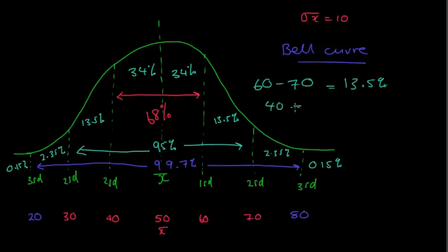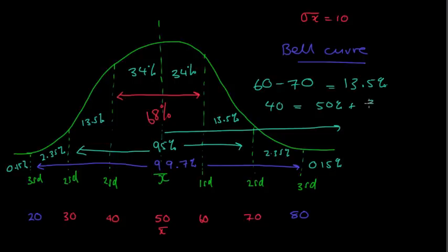We might also ask: what percentage of people scored above 40? Well, above 40 — we have a full half of it which would be 50%, plus that extra 34%, which would give a total of 84%. So you can see what we're doing with our percentages. This is why it's really important that you learn this particular bell curve — go have a look in your textbook and start practising drawing these out.